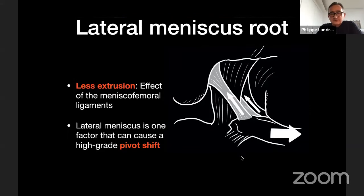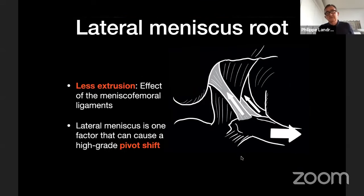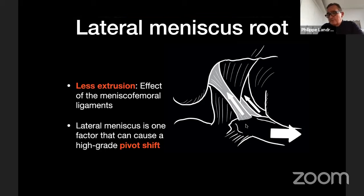The lateral meniscus is somewhat different from the medial. The peak contact pressure is higher with lateral meniscus root tear, but fortunately there is generally less extrusion, because two meniscofemoral ligaments — Humphrey and Wrisberg — are attached to the posterior part of the lateral meniscus, anterior and posterior to the PCL. These ligaments hold the lateral meniscus, so even when there is a root rupture, they keep the lateral meniscus in a better position.